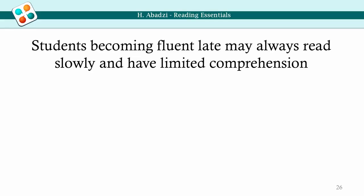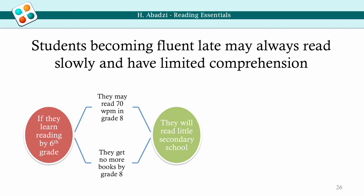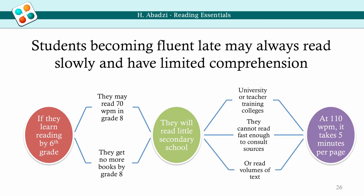Unfortunately, students who become fluent late may always read slowly and have limited comprehension. For example, if students finally learn reading in grade 6, they may read only 70 words per minute in grade 8. They may get no books in secondary school, so speed will not increase much. If they get to university or teacher training colleges, they may be unable to consult complex reference texts. At 110 words per minute, it takes about 5 minutes to get through a page.